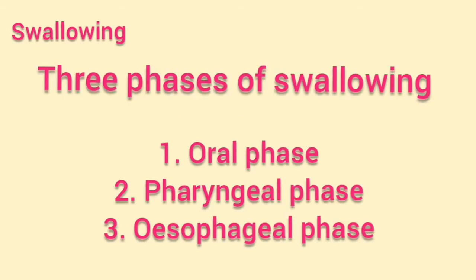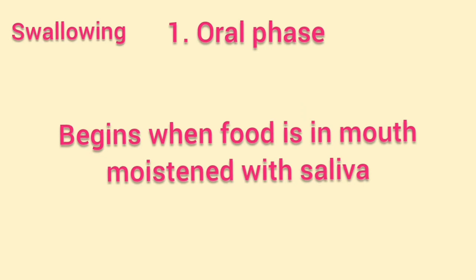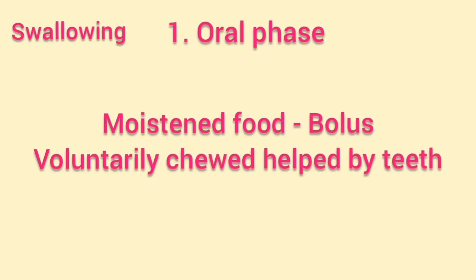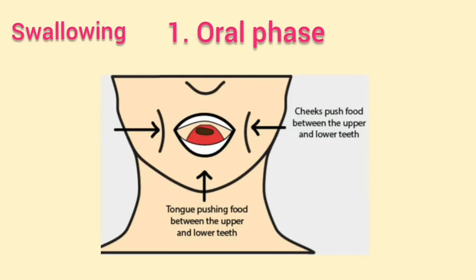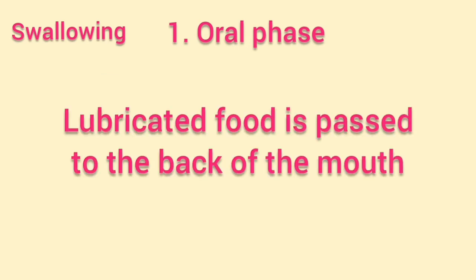Swallowing involves three phases: the oral phase, the pharyngeal phase, and the esophageal phase. The oral phase begins when food is placed in the mouth and moistened with saliva. The moistened food is called a bolus. The bolus is voluntarily chewed, with teeth and muscles controlling mastication. During this phase, food is prepared into a smaller size and well lubricated to be passed to the back of the mouth.